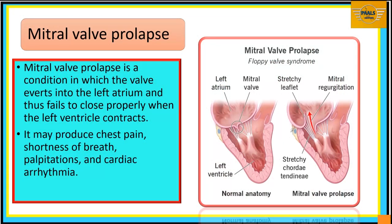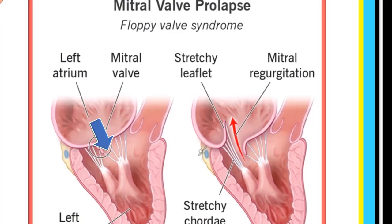We now consider mitral valve prolapse. In mitral valve prolapse, there is an inversion of the valve into the left atrium, causing improper closure of the orifice when the left ventricle contracts. We see a normal mitral valve compared to an inverted valve; when this valve closes improperly, blood leaks into the atrium, giving rise to mitral regurgitation. It will produce chest pain, shortness of breath, palpitation, and even cardiac arrhythmia.